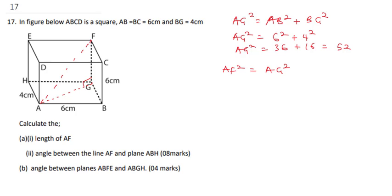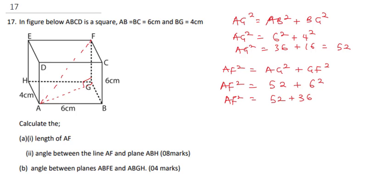Now, AF² = AG² + GF². My AG² gave me 52, and GF is the height of 6, so GF² = 36. Therefore AF² = 52 + 36 = 88. To find AF, take the square root of 88, which gives us 9.38cm.